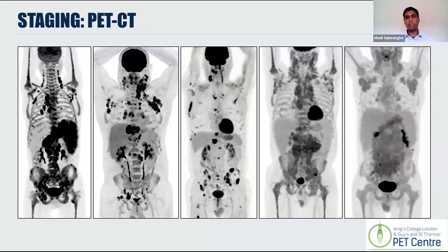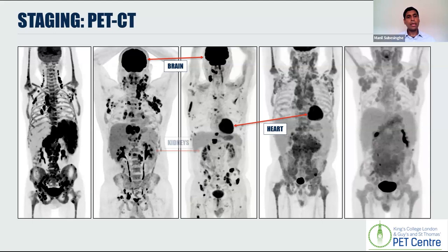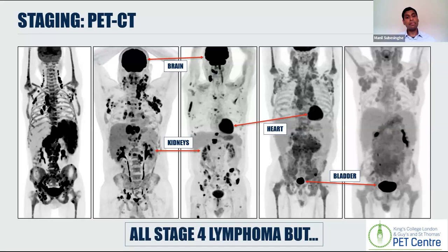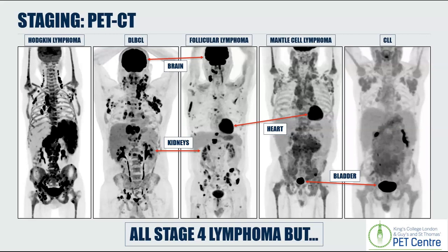We can also use PET-CT to stage patients with lymphoma. These scans demonstrate the distribution of radioactive sugar throughout the human body, and a general rule of thumb is that anything that is black often reflects cancer. An exception is the brain and the heart, which use a lot of sugar to generate energy, as well as the kidneys and the bladder, which is how the body gets rid of the radioactive sugar. All of these persons shown have stage four lymphoma with bone marrow involvement, but each has a different type: Hodgkin's lymphoma, diffuse large B-cell lymphoma, follicular lymphoma, mantle cell lymphoma, and CLL. The take-home message is that although scans can tell us how far a lymphoma has spread, they cannot tell us what type of lymphoma a patient has.